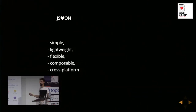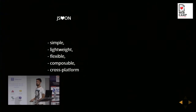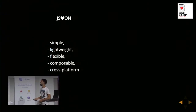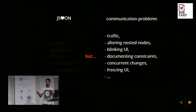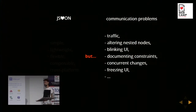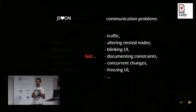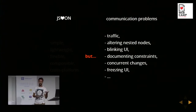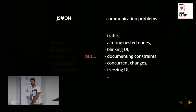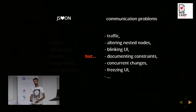We all love JSON — not only because it's a simple, lightweight, and cross-platform format. But JSON communication, and network communication in general, does have its own downsides as well: trafficking huge amounts of data, altering nested nodes, blinking the entire UI to avoid such issues, resolving concurrent changes, or freezing the UI to avoid conflicts — these are only a few problems to start with.